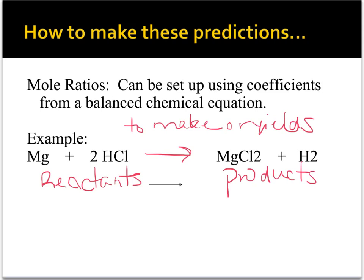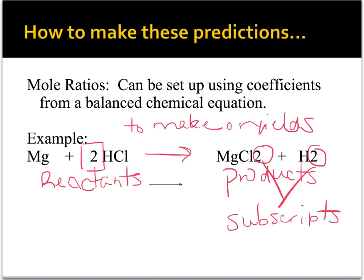There are some numbers to note here. Those two I just circled are subscripts — we should be pretty familiar with subscripts from formula writing and naming. When counting atoms, subscripts apply just to the element written directly after them: that two applies to the Cl, that two applies to the H. This other two written over here is a coefficient. Just like in math class, coefficients act to multiply everything written directly after them until you get to an arrow or a plus sign — so that two applies to both the H and the Cl.